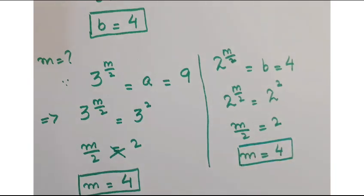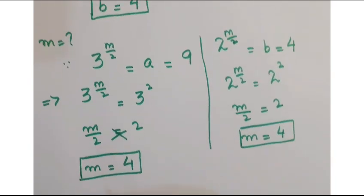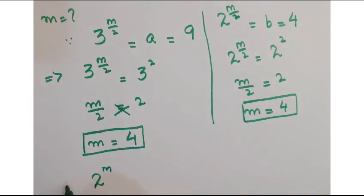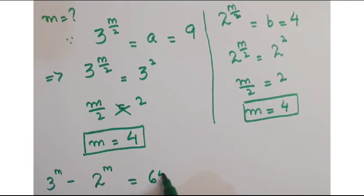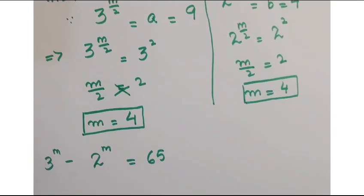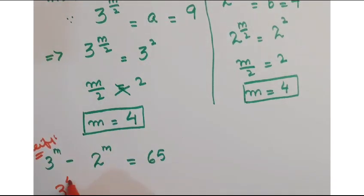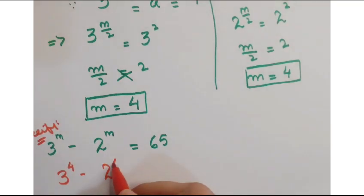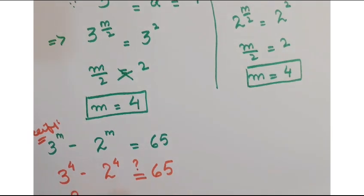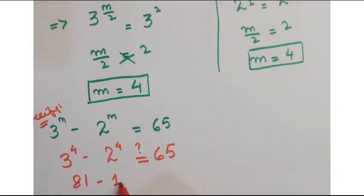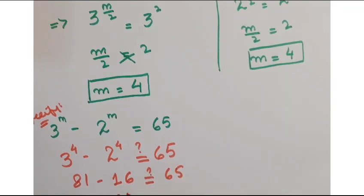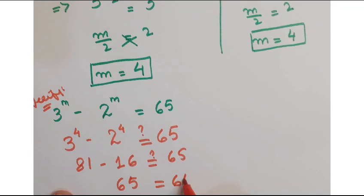Now, let's verify. For verification, put the values that is 3 to the power m minus 2 to the power m is equal to 65. So how we are going to verify it? 3 to the power 4 minus 2 to the power 4. We are going to check whether it is equal to 65 or not. This is 81 and this is 16. So here we get 65 which is equal to 65.